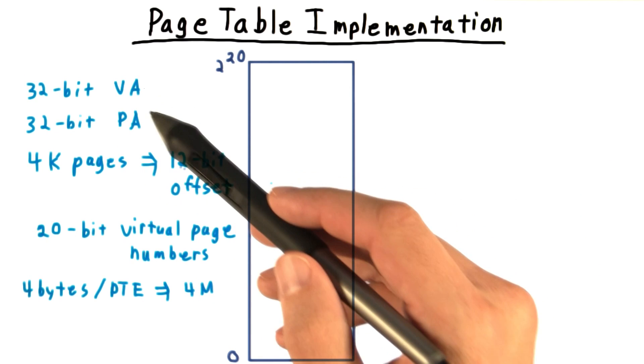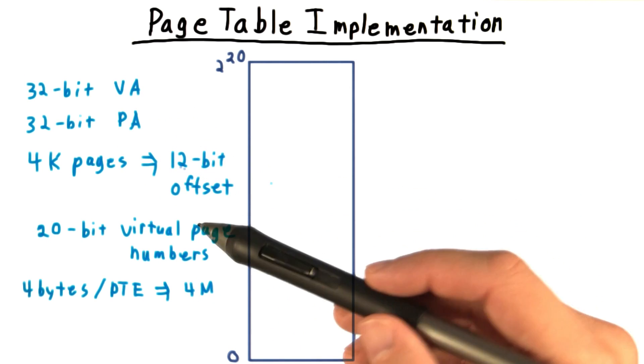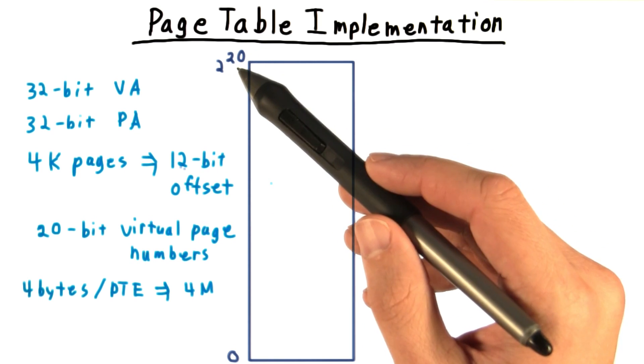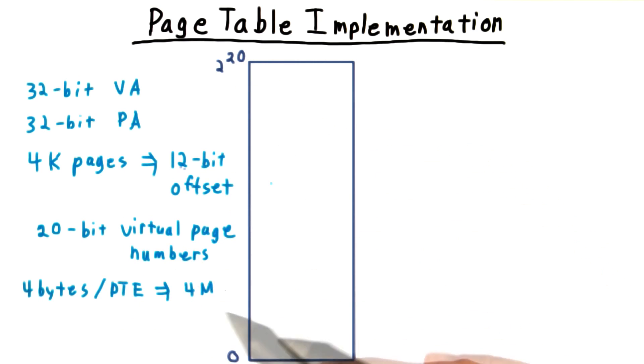Even with just 32-bit virtual addresses, we would still need a page table with 2 to the 20th entries, and that would put us on the order of several megabytes. And we need one page table per process.